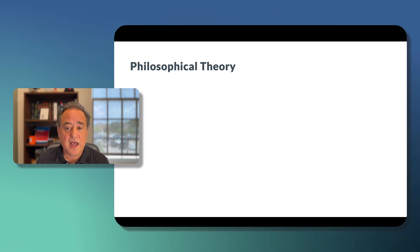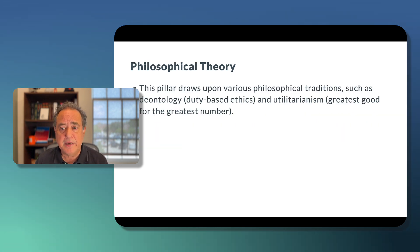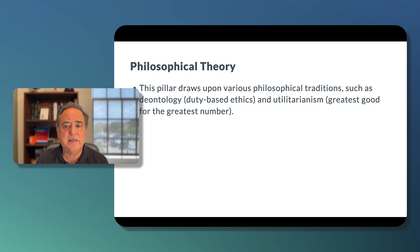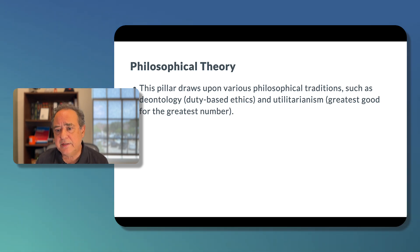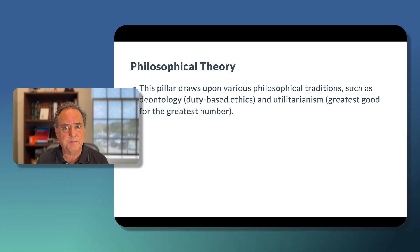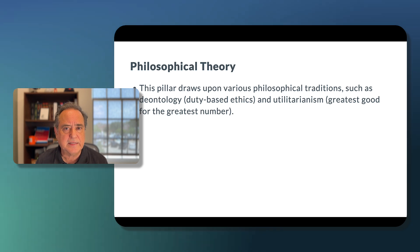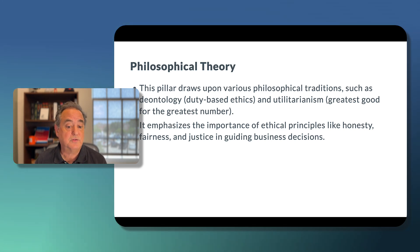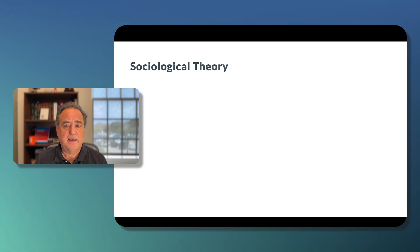When we draw upon philosophical theory, this pillar draws upon various philosophical traditions such as deontology — which is duty-based ethics — and utilitarianism, which refers to consequences-based ethics, meaning we make a decision that achieves the greatest good for the greatest number. Philosophical theory also emphasizes the importance of ethical principles like honesty, fairness, and justice in guiding business decisions.